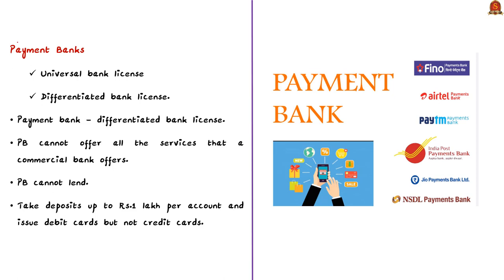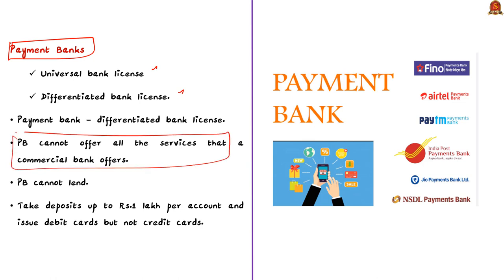Firstly, let us see about payment banks. There are two kinds of banking licenses granted by the Reserve Bank of India — universal banking license and differentiated banking license. Payment banks come under the differentiated banking license since they cannot offer all the services that a commercial bank offers. Note that a payment bank cannot lend. It can take deposits up to 1 lakh per account. It can issue debit cards but not credit cards.